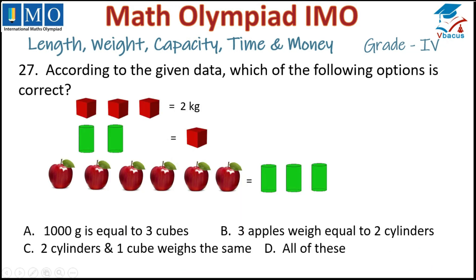Question 27: According to the given data, which option is correct? Option: 1000 grams equals 3 cubes — but 3 cubes equal 2 kg which is 2000 grams, so this is incorrect. Option: 3 apples equal 2 cylinders — making it half gives 1.5 cylinders, so also incorrect. Option C: 2 cylinders and 1 cube weigh the same — yes, that is correct. Tick option C.